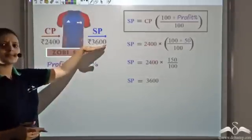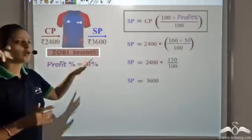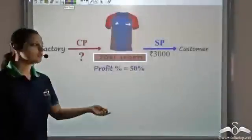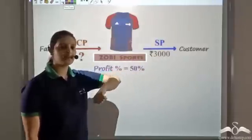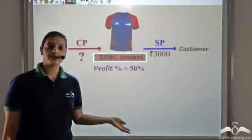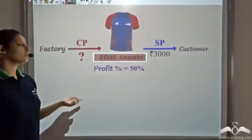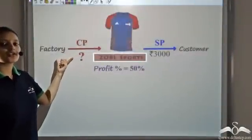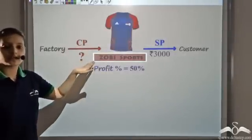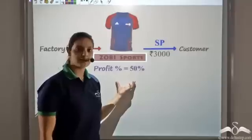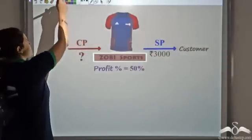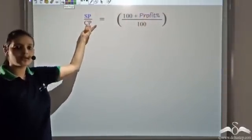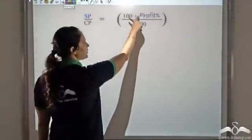But what happens now is that customers are not ready to pay so much — they were not paying more than 3000. But Zobie Sports was determined to get a profit of 50 percent. So what they do is try to negotiate with the factory to decrease the price at which they are buying these t-shirts. What should the cost price be now — how much should they ask the factory to give them the t-shirt for such that they get a profit of 50 percent if the selling price is 3000 rupees? We know the selling price, we know the profit percent, and we want to find the cost price. We know SP by CP is (100 plus profit) by 100.